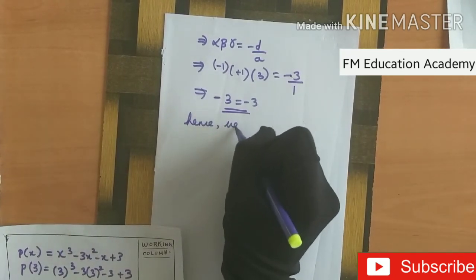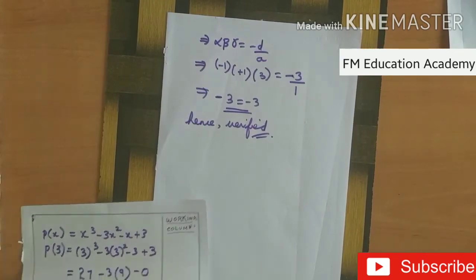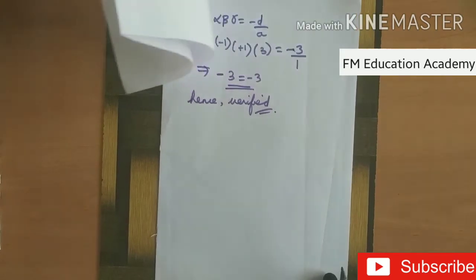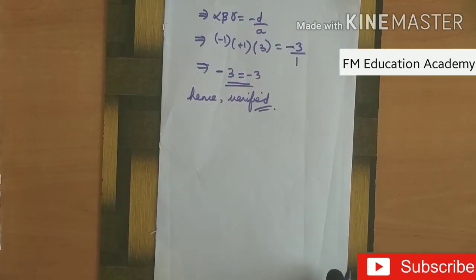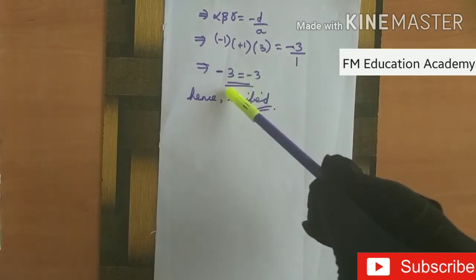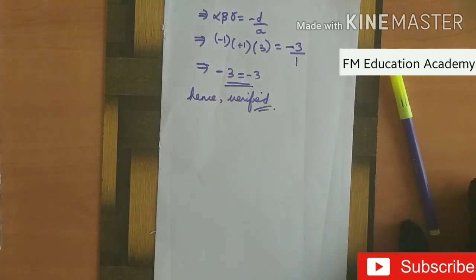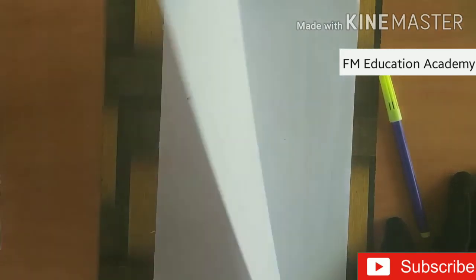Hence the relationship between zeros and coefficients is also verified, and we found that minus 1, plus 1, and 3 are zeros of the cubic polynomial. To verify the relationship we have three formulas: alpha plus beta plus gamma equals minus b by a; alpha·beta plus beta·gamma plus gamma·alpha equals c by a; and alpha·beta·gamma equals minus d by a. If LHS equals RHS in all three formulas, the relationship between zeros and coefficients is satisfied. Thank you for watching — please share the video with your friends.